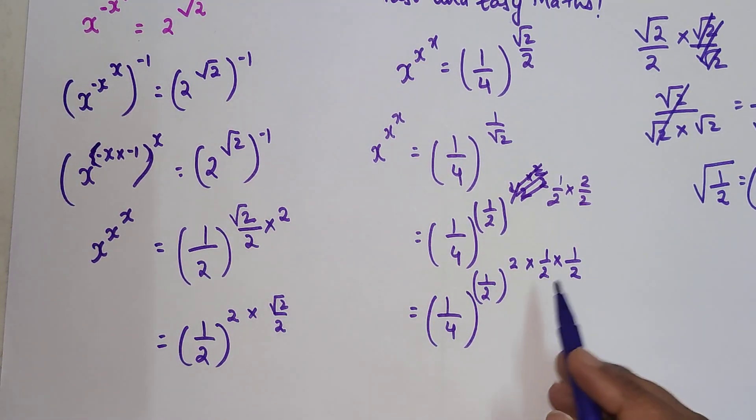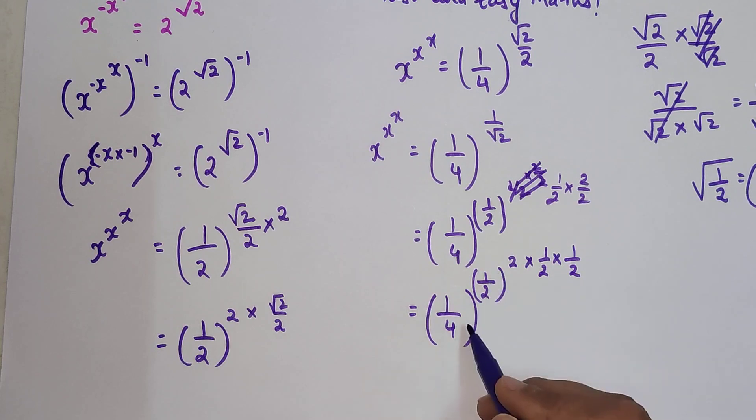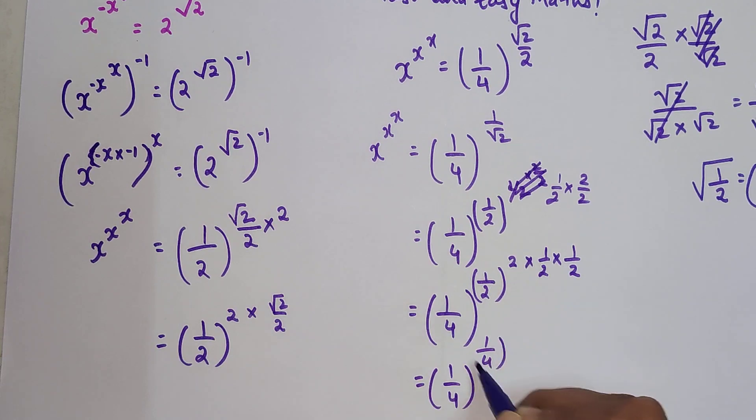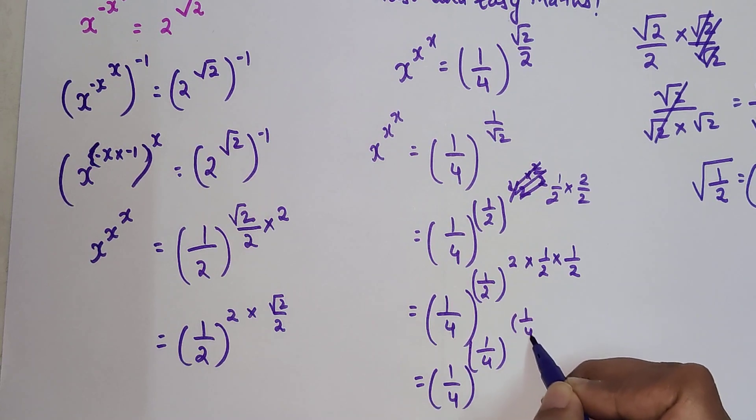Here now, 1 upon 4 the whole raised to 1 upon 2 square is 1 upon 4. And this 1 upon 2 into 1 upon 2 is 1 upon 4.